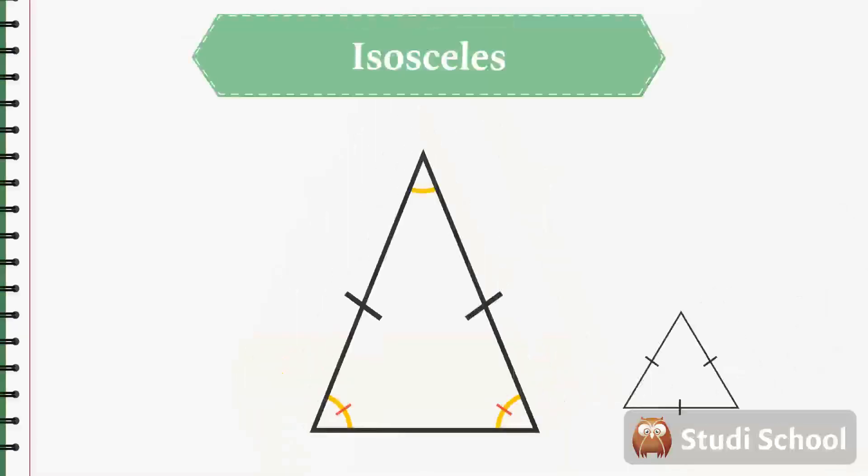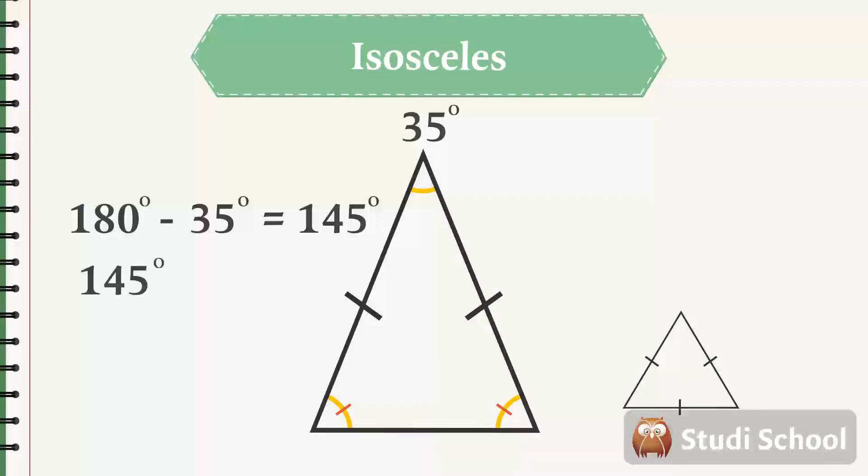Since we know how large the upper angle is, we can now calculate the two lower equal angles. The measure of all three angles sum to 180 degrees, and 35 of those 180 are made up of the upper angle. That leaves 145 degrees. The two lower angles are equal, so they must be 145 divided by 2. Thus, the two equal angles are 72.5 degrees.